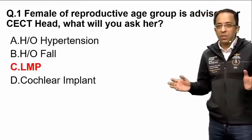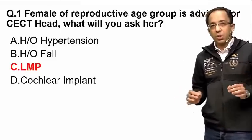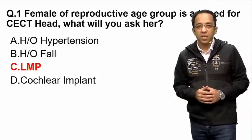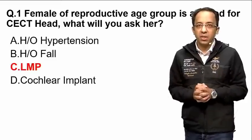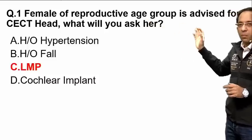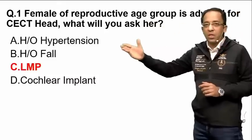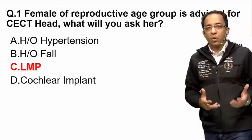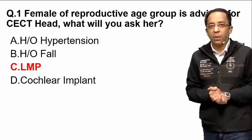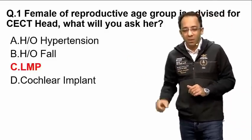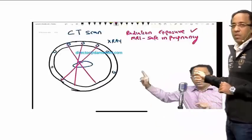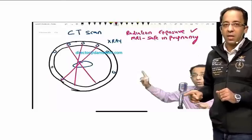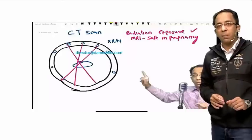One question we have always discussed in class: CT scan has radiation exposure. When we do a CT brain, the radiation exposure is equivalent to 100 to 150 chest x-rays. CT abdomen goes up to 500 chest x-rays. The question asked: a female in reproductive age group is advised CT head for headache — what will you do? We need to know the LMP first to make sure we are not giving radiation to a pregnant lady. The correct answer was: ask LMP.